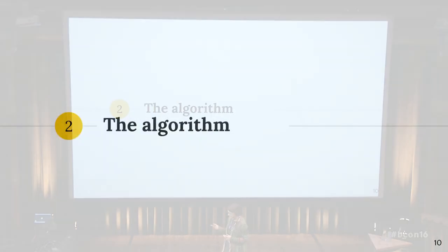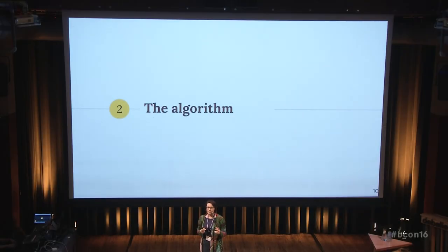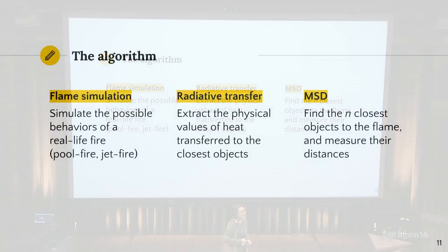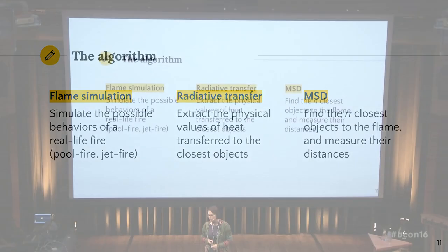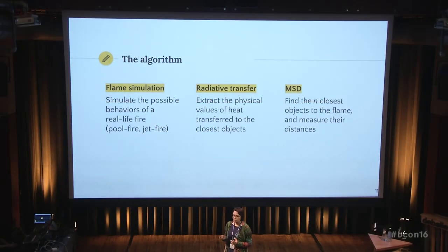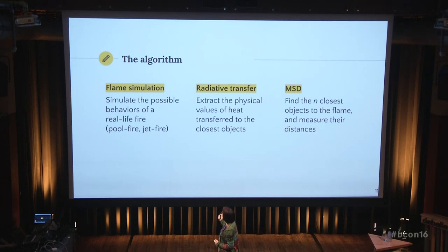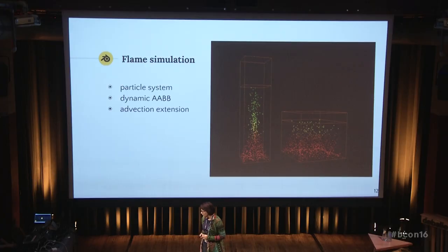The simulation consists of an animation inside Blender of the interaction of the fire with surrounding objects. For each frame of the animation, this algorithm is executed. It is composed of three main parts: flame simulation, which represents a real-life fire behavior inside Blender; radiative transfer, the computation of real physical values of heat to be monitored by the simulator; and radiative transfer computed by means of minimum separation distance between two 3D objects in the scene.